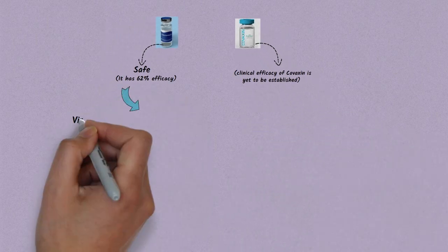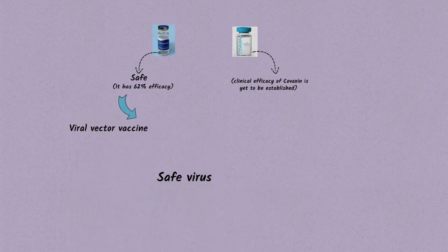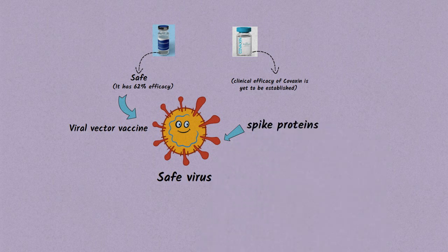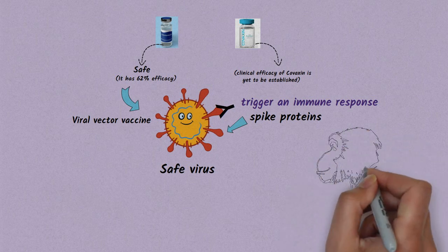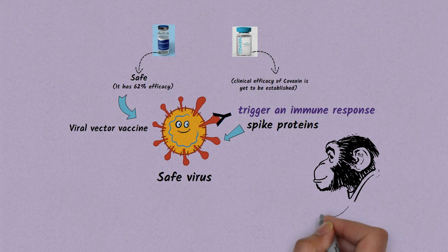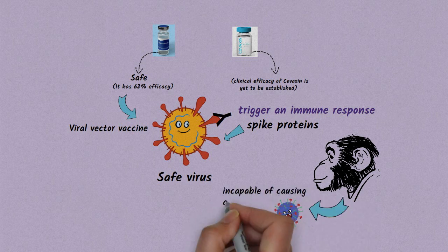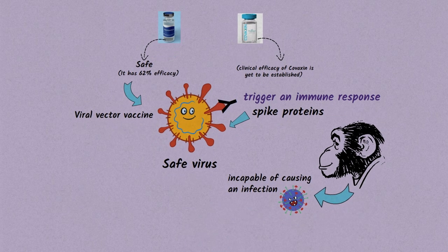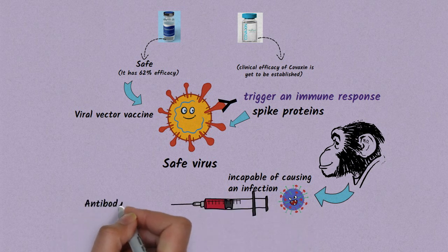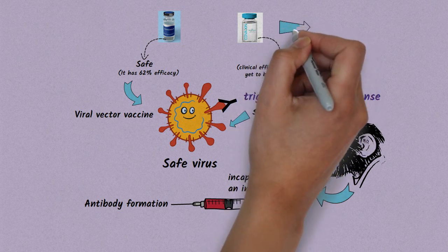Covishield is a viral vector vaccine. They use a safe virus to deliver specific subparts called spike proteins so that it can trigger an immune response without causing disease. They use a chimpanzee adenovirus vaccine vector that usually causes the common cold in chimpanzees and does not infect humans. The adenovirus has been weakened to an extent where it becomes incapable of causing an infection. When a vaccine is injected, it creates an antigenic reaction and antibodies are formed, and the immune response of the host comes in.